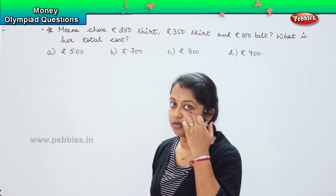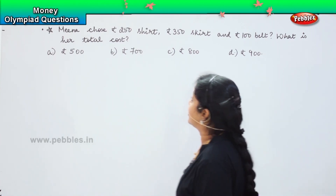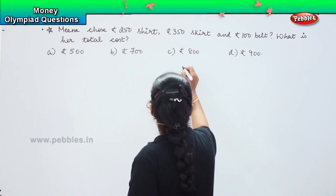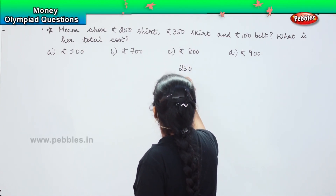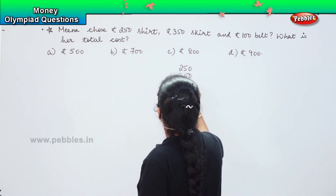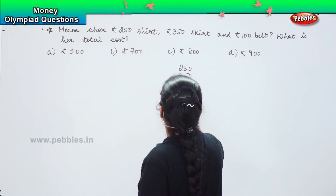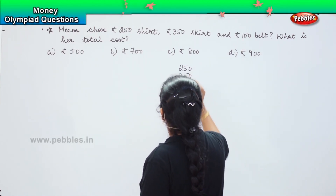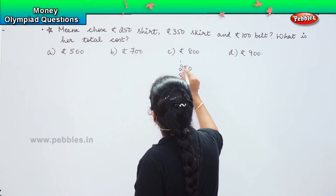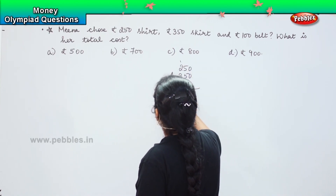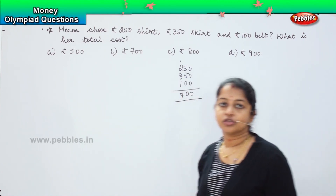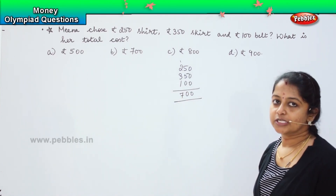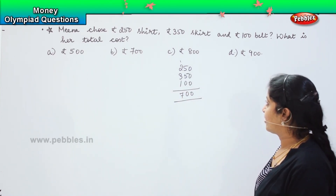So what are we going to do here? We need to add. She purchased a shirt for rupees 250, a skirt for 350, and a belt for 100. So 0, 5 plus 5 is 10, 1 plus 2 is 3, 3 plus 3 is 6 and 6 plus 1 is 700. So she has spent a total of 700 rupees.